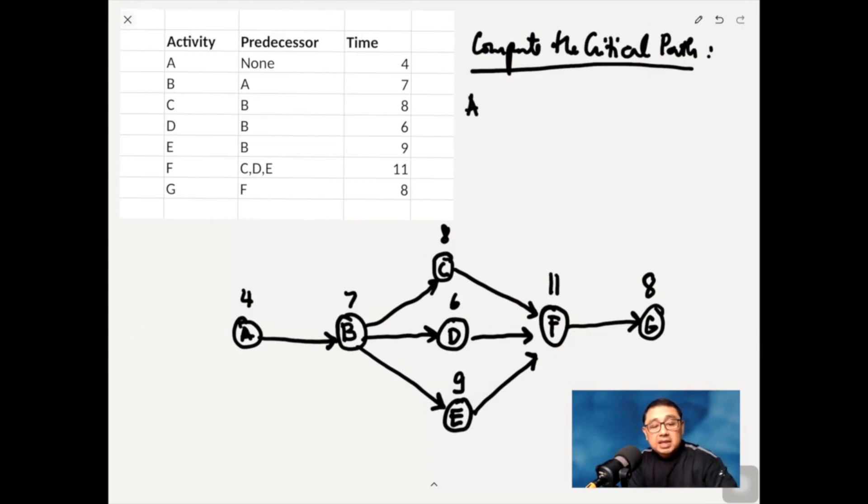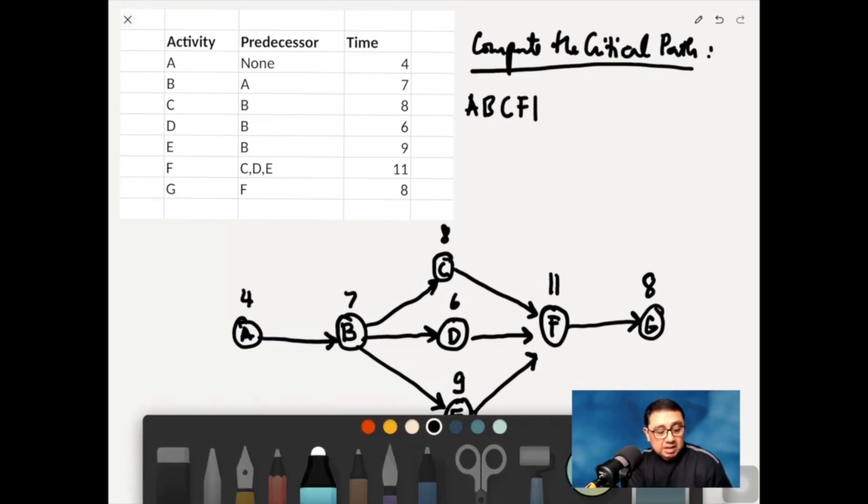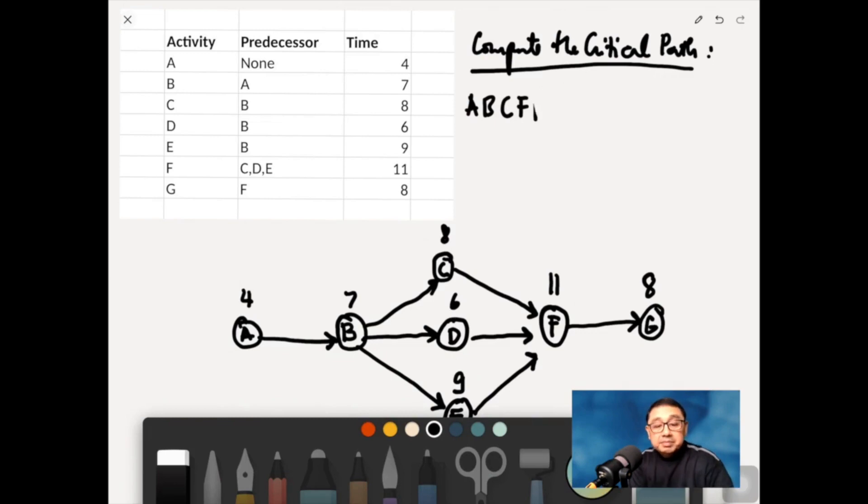So we have A plus B, and then C, and then F, and then G. And then you just attach the numbers there. So that's 4 plus 7, and then plus 8, plus 11, plus 8.